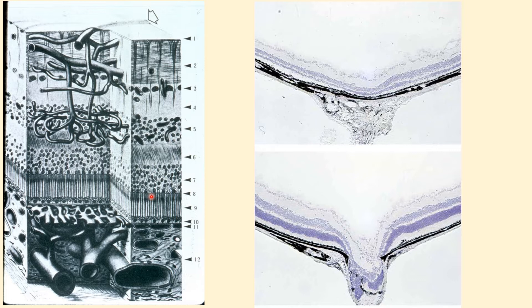Cells consume oxygen to generate energy, and without oxygen they die. Oxygen is delivered to the photoreceptors from vessels in the choroid, which are under the retina, and the amount of oxygen delivered is matched to the amount consumed by the cells. After 95% of the cells in the outer retina die, there is much less consumption of oxygen, but the amount being delivered is unchanged, resulting in a large excess of oxygen surrounding the cones.